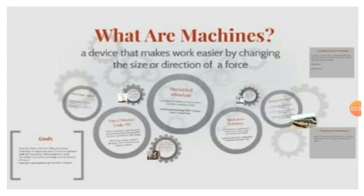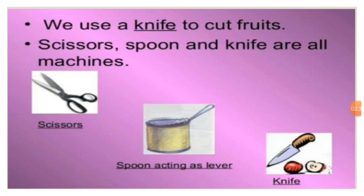Devices that make our work easier by changing the size or direction of force are called machines. Just like an opener which is used to open a bottle. So this bottle opener is known as a machine. We use a knife to cut fruits, scissors, spoons and knife are all machines because they make our work easier. So they are called as machines.